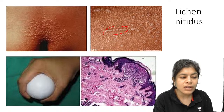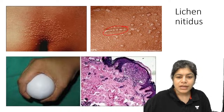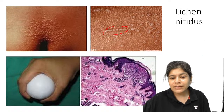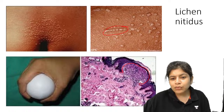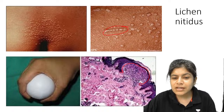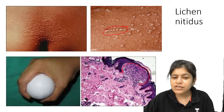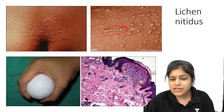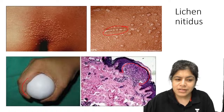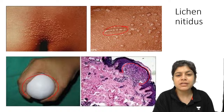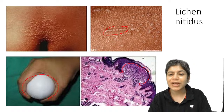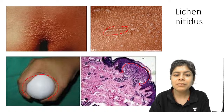On histopathology of lichen nitidus you see a 'claw clutching a ball' appearance — one dermal papilla is involved, the rete ridges curve inward, there is basement membrane destruction, and a lichenoid infiltrate of lymphocytes and histiocytes with basal cell vacuolization involving just one dermal papilla. Remember: lichen nitidus — micropapules, whitish, shiny, show Köbnerization.